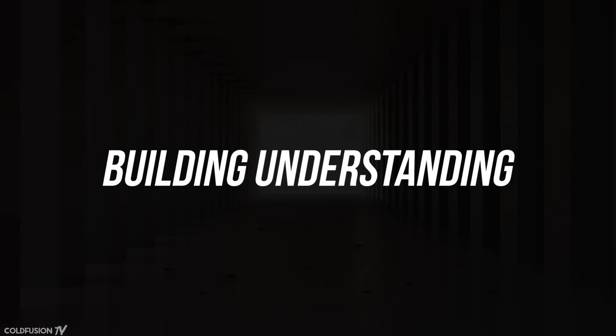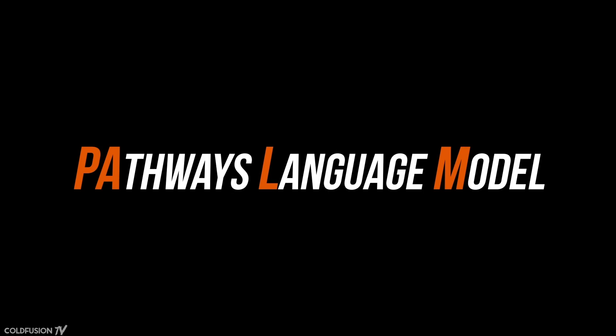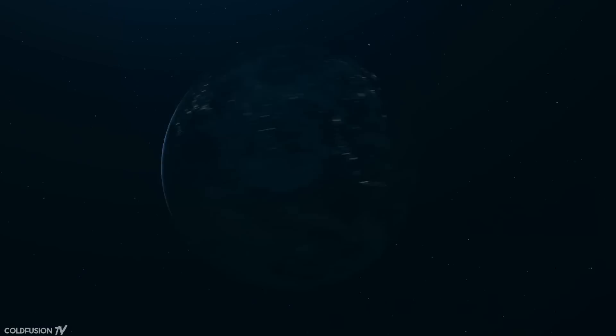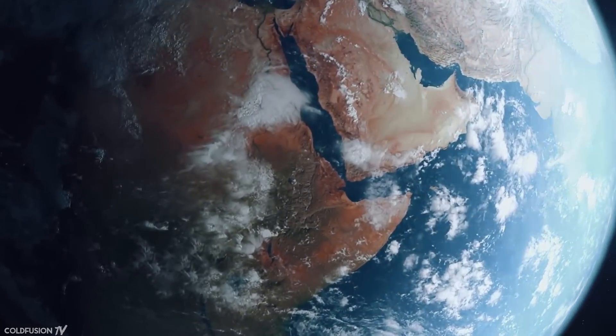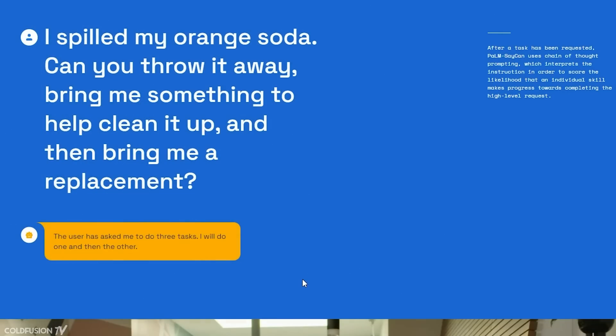So how is understanding achieved? Google Research is using their PALM model in the robot. So what on earth is PALM? PALM stands for Pathways Language Model. It's an algorithm that's been trained on countless amounts of text from the internet. We're talking hundreds of billions of parameters and petabytes of text. The result of all of this training is its ability to understand language.